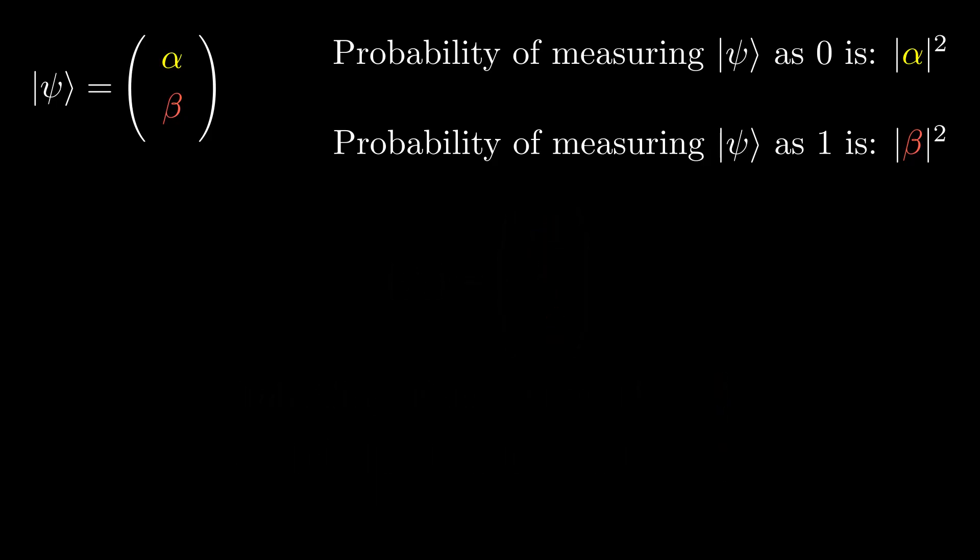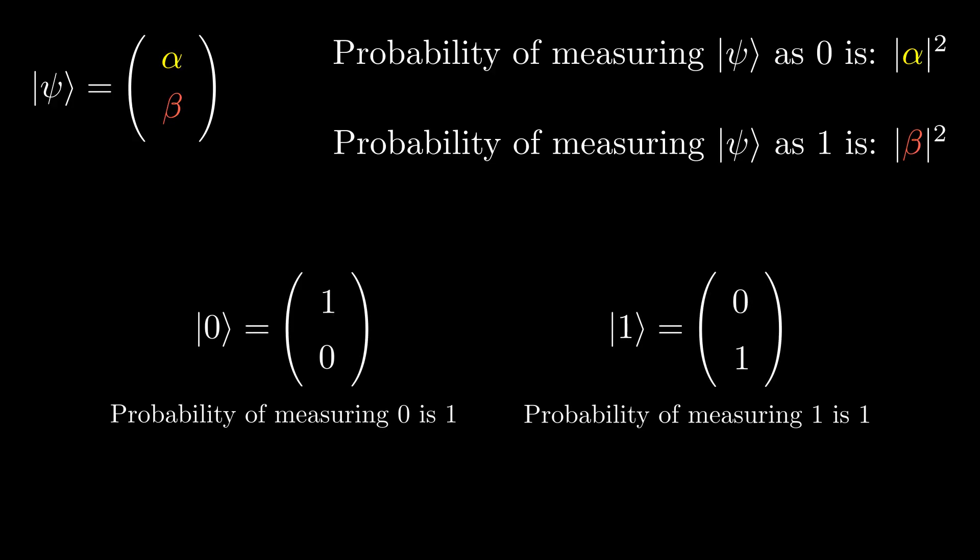If we now think about how we defined the zero and one state at the start of the lesson, they should now start to make sense. We stated that zero was the column vector (1,0), and now we can see why. The probability of measuring zero is one, so it will always be measured as zero. This is the same for the one state.